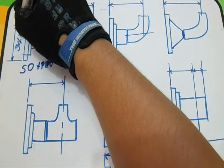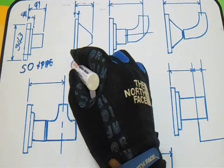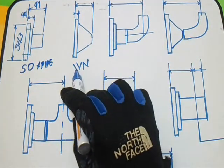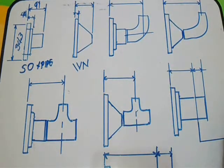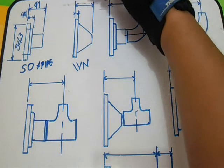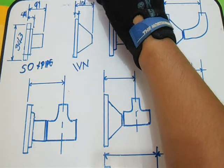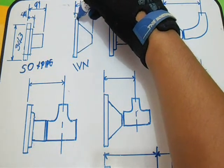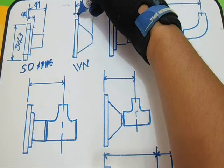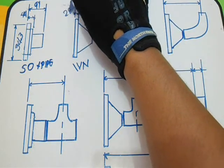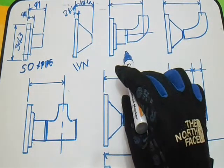Next, this is WN (weld neck flange). Our dimension here is 101.6, and this face is 12.6 which is 28.6.